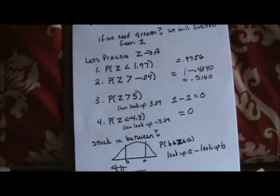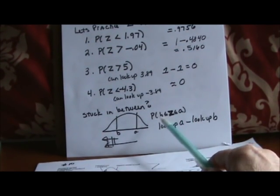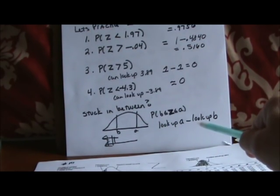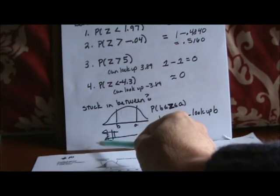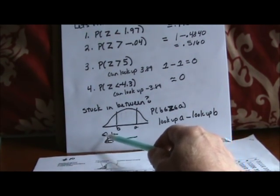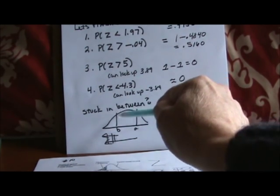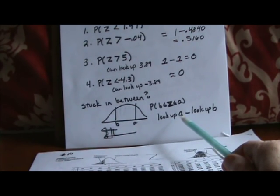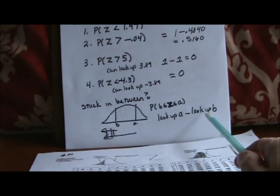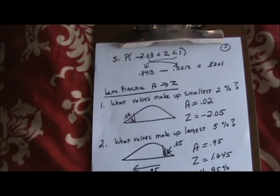The last case is what I call 'stuck in between.' If they ask for a z between a and b: looking up a gives you all the area up to a, and looking up b gives you all the area up to b. To get just the middle part, you subtract them — that cancels everything outside, leaving what's in between. So for a stuck-in-between problem: look up the larger z, get its area; look up the smaller z, get its area; then subtract.